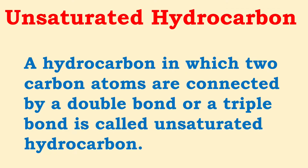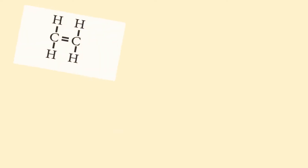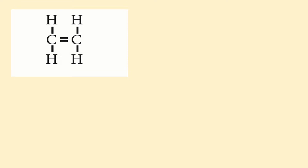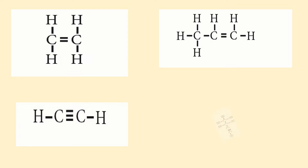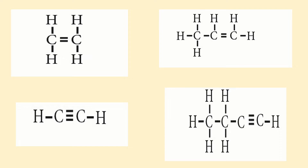Next, unsaturated hydrocarbon. A hydrocarbon in which two carbon atoms are connected by a double bond or maybe a triple bond is called unsaturated hydrocarbon. Looking at the structural formula: here we have two carbon atoms connected by a double bond, and here three carbon atoms where two are connected by a double bond. Also, compounds where two carbon atoms are connected by a triple bond are also unsaturated hydrocarbons. If carbon atoms are connected by double or triple bonds, that is called unsaturated hydrocarbon.